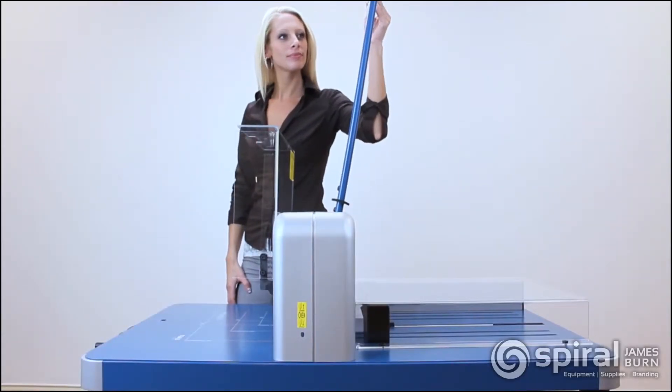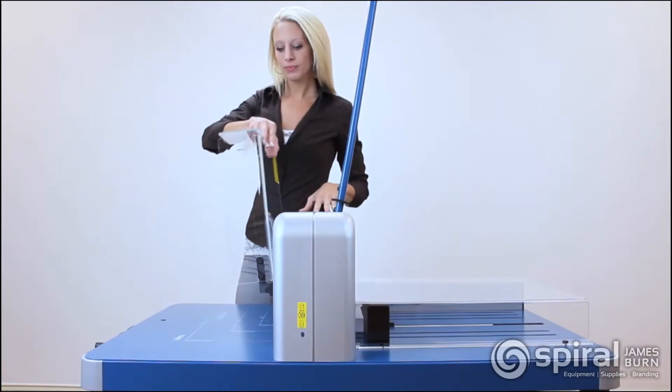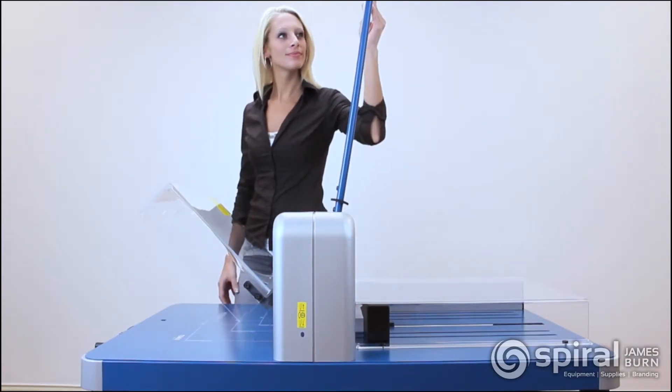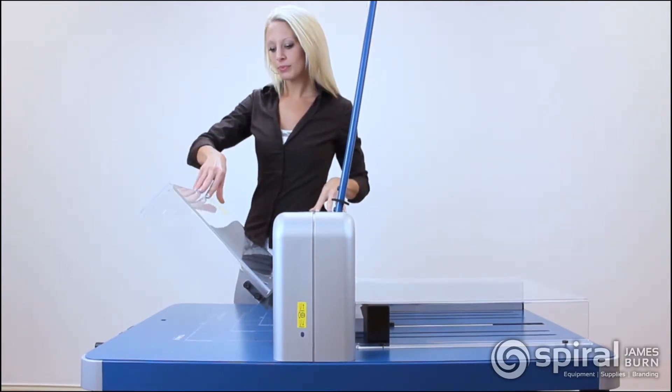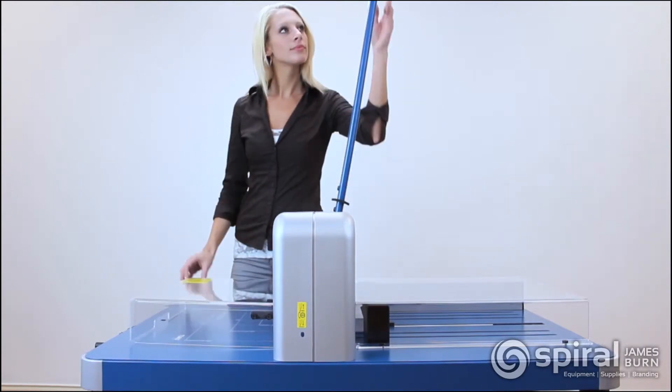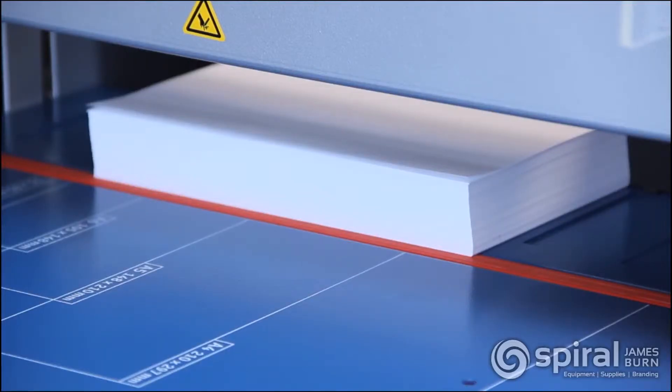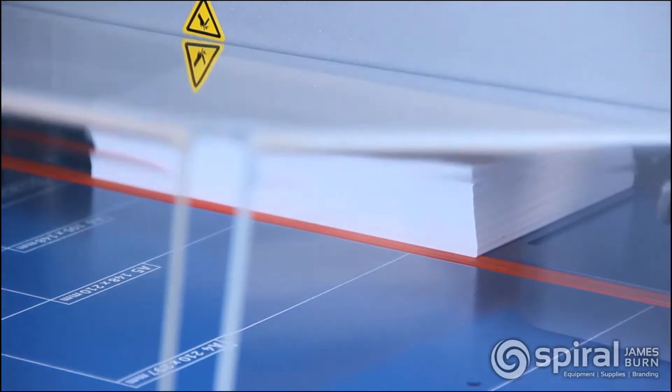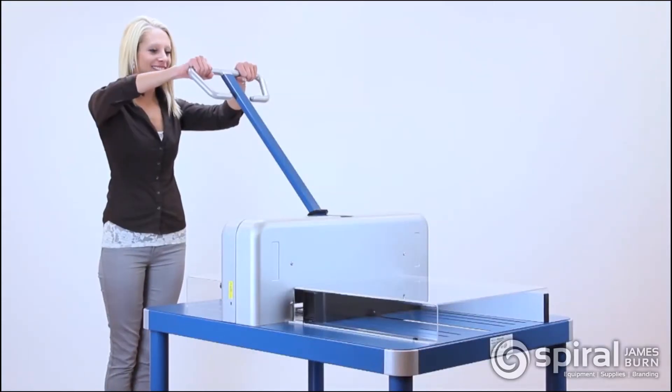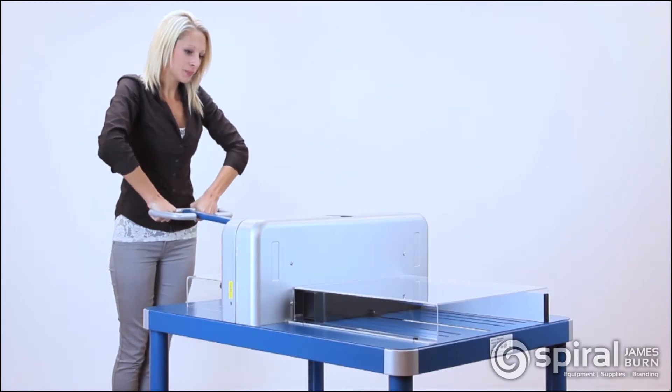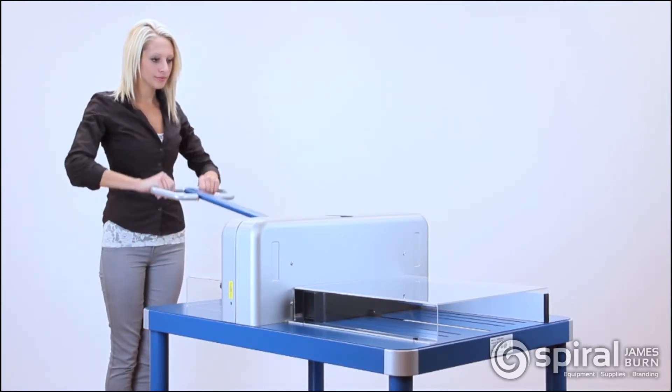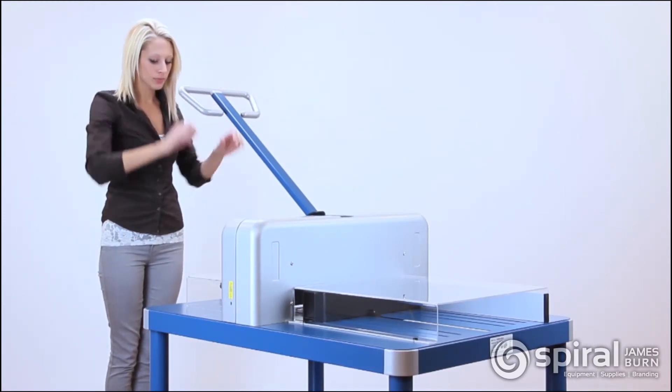Like all Dahle products, safety is at the forefront of design. Acrylic shields found on either side of the cutting blade can lift up or down to load and remove paper. When the shields are up, the blade is locked in place. It's only when the shields are down and covering the blade that cutting can resume.